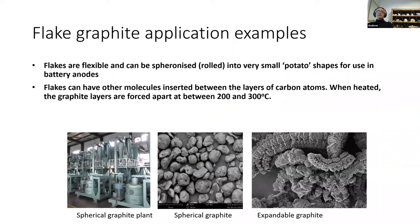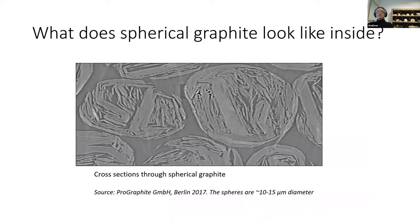Two trending areas of graphite consumption: first is flake graphite. The photo on the left is a spherical graphite plant — they take very fine graphite, less than about 150 microns, and put it into machines which roll the graphite into little potato-shaped particles. That's the middle illustration. They get used in battery anodes. And if you cut those little potato shapes in half, you can see the graphite is rolled into little balls, 10 to 15 microns in diameter.